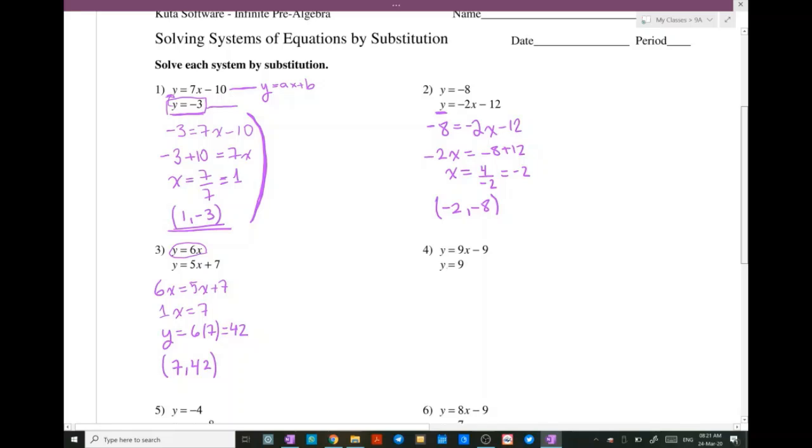And this one here, you have 9 equals 9x minus 9. So 18 is equal to 9x. So x is equal to 2. So the value of the solution is 2 and 9.